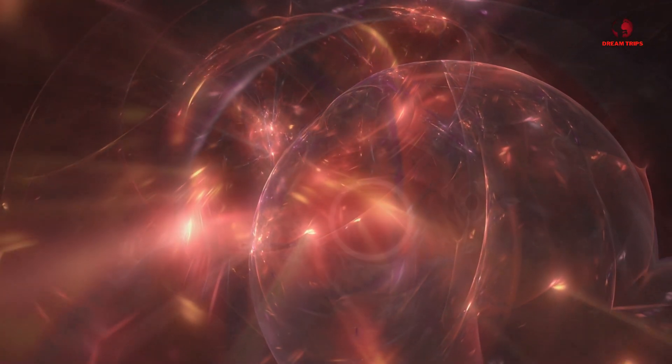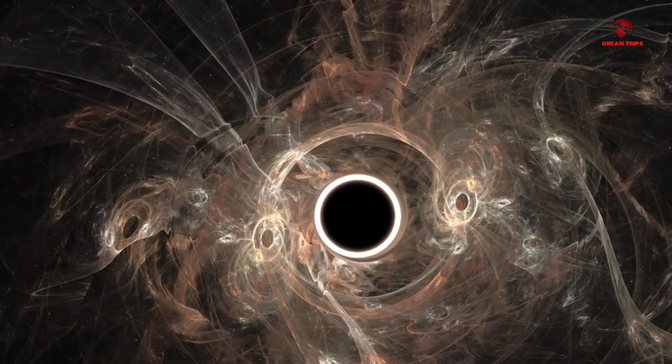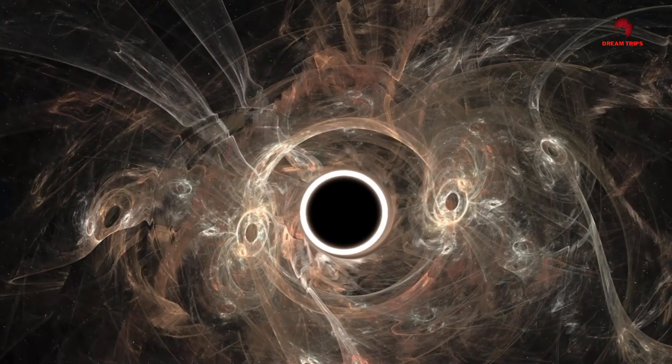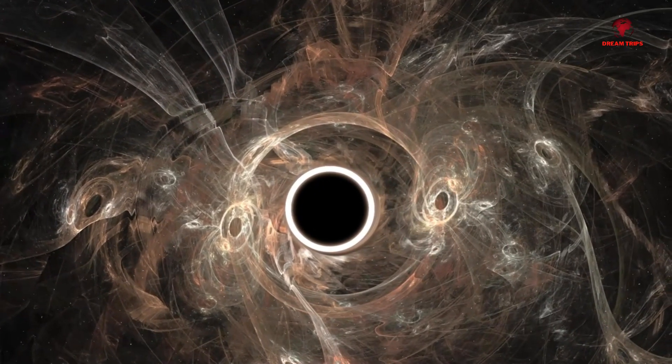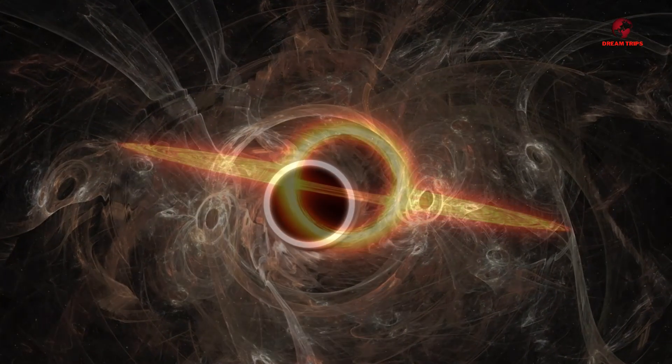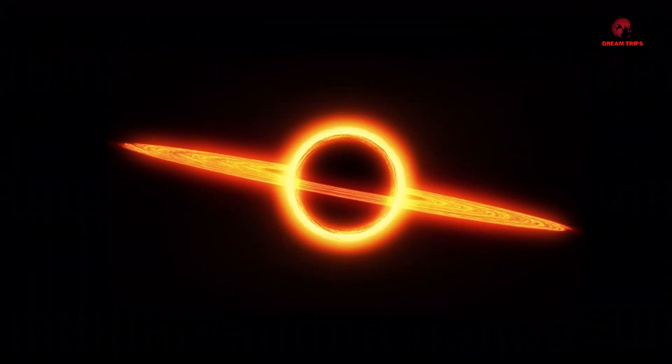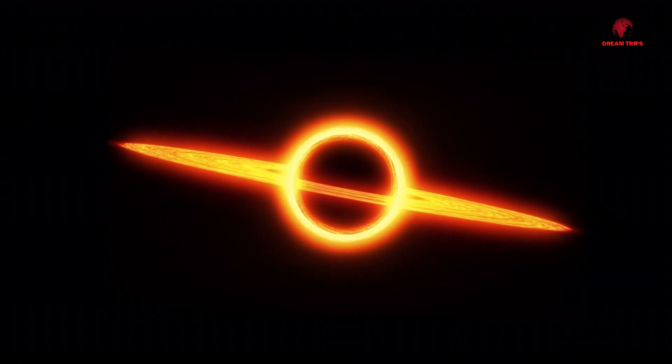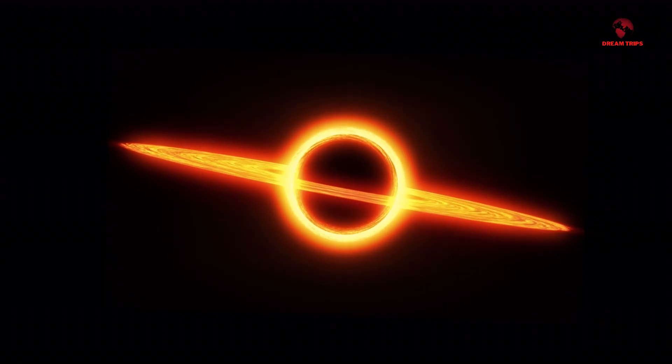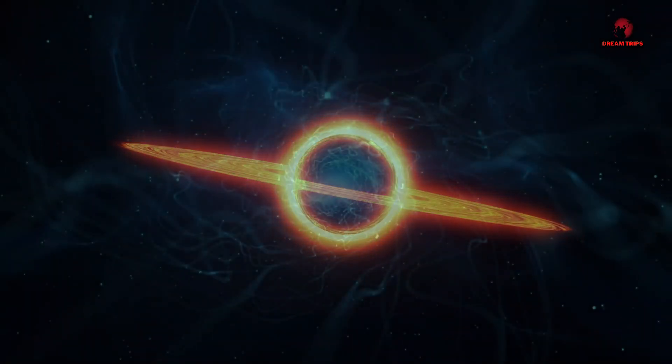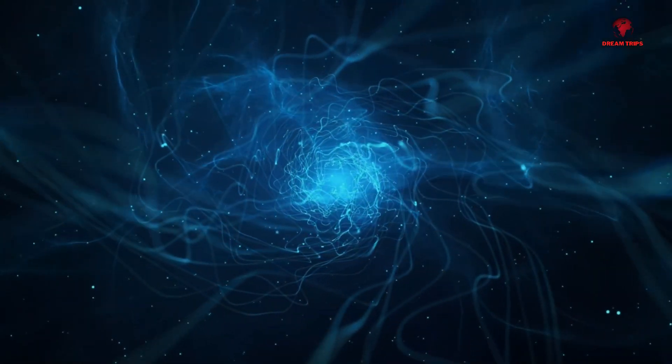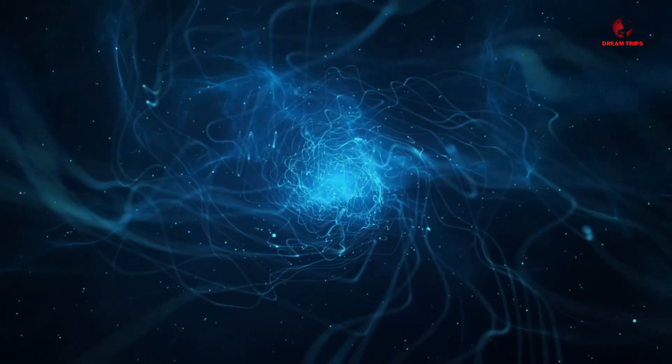Imagine something so massive, moving at a speed of about 1,600 kilometers per second. Yes, you heard it right. This rogue black hole, a celestial entity of unimaginable density, is hurtling through the cosmos at such a mind-boggling speed. To put this in perspective, it's over 4 million times faster than the average speed of a commercial jet.